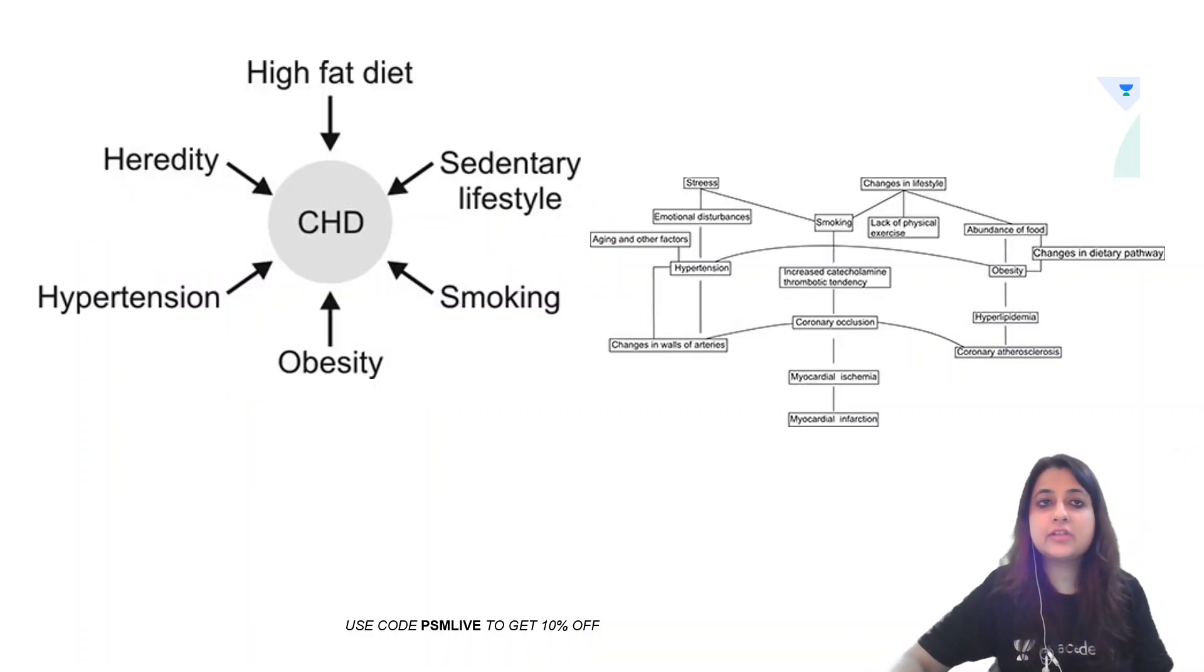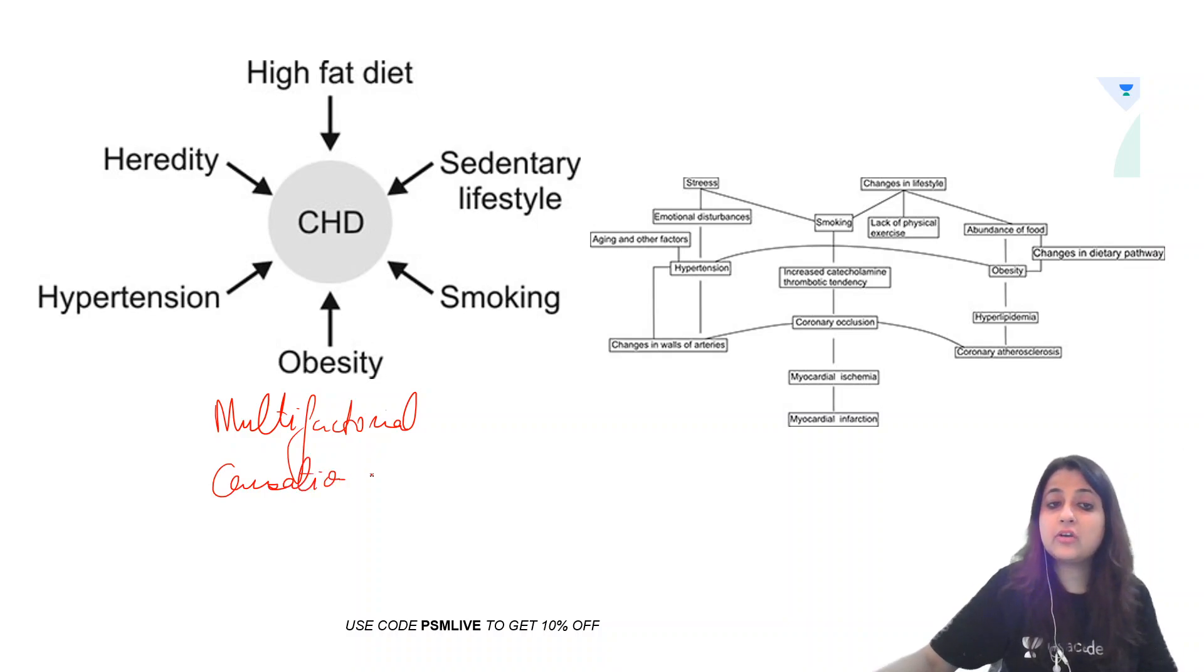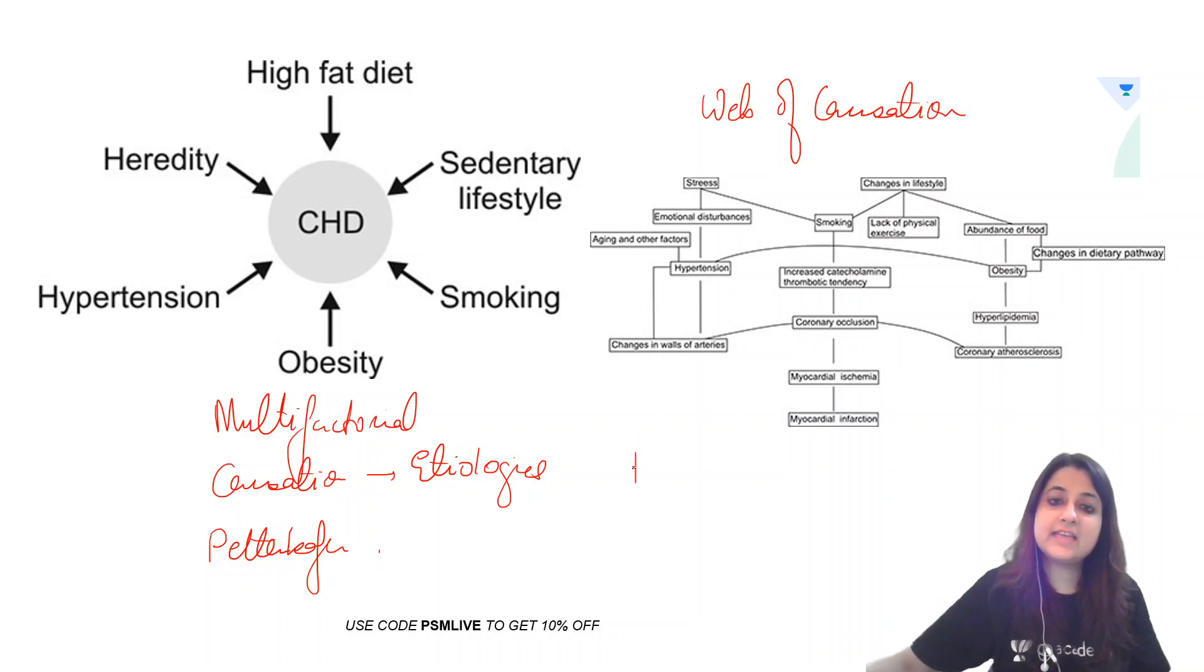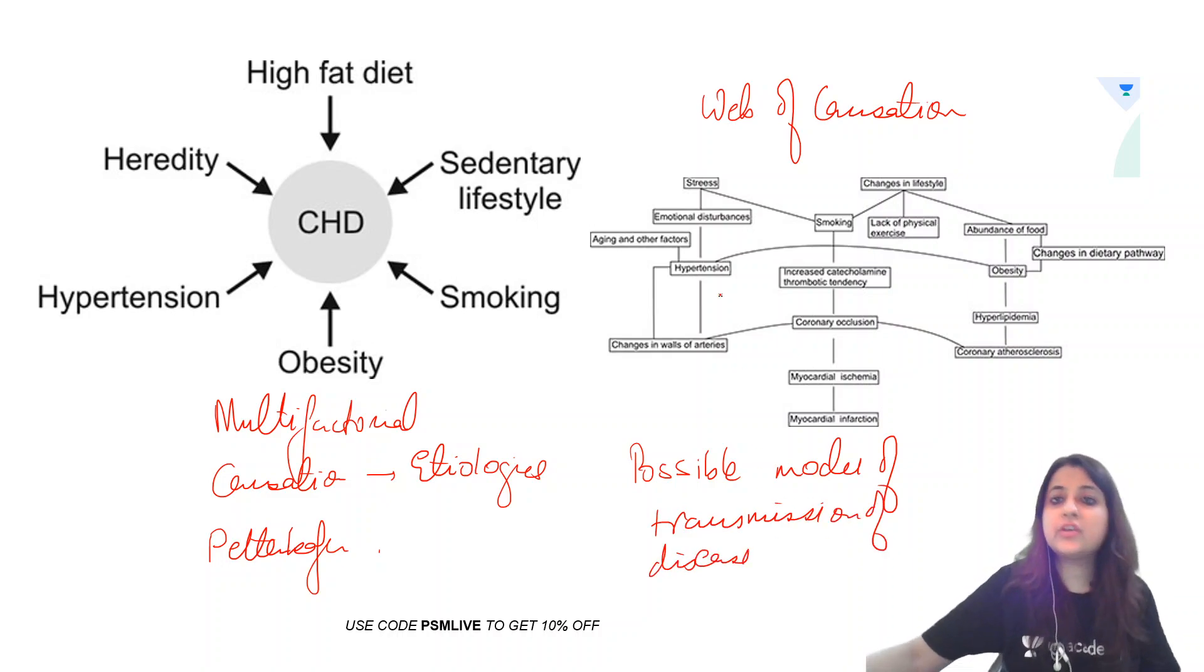Let's have a look at the other theories also. This one over here, this is theory of multifactorial causation. Theory of multifactorial causation hints on the possible etiologies of the disease. This was given by Pettenkofer. And if you look at this one, this is like a web. So this is web of causation. Web of causation hints on the possible modes of transmission of a disease, so you can know where to block the chain. This was given by MacMahon and Pugh.